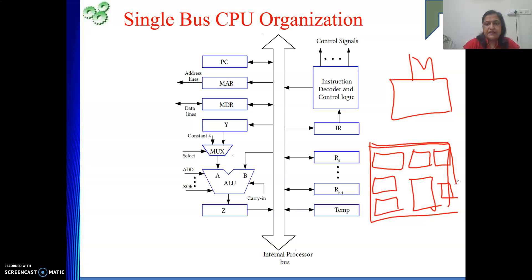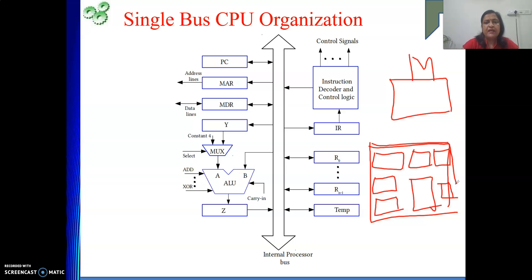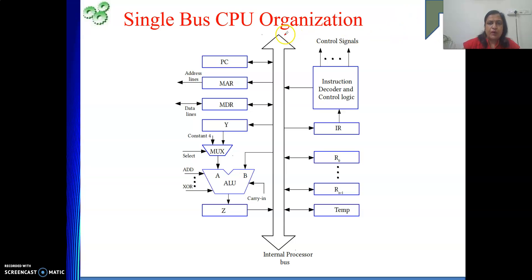To do some work, these components need to interact with each other. The content of PC is given to MAR, then sometime the content of MDR is sent to ALU, and the result of ALU is given to some register. That means they need to be connected with each other. In this chapter, we are going to connect these components and make them work together in a coordinated way to execute one particular instruction.